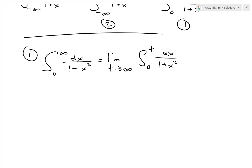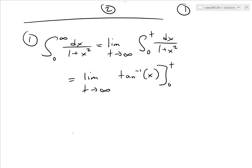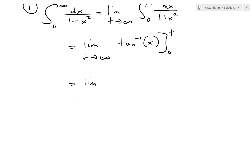The antiderivative of 1 over 1 plus x squared is inverse tan of x. So this equals the limit as t approaches infinity of inverse tan of x evaluated from 0 to t, which gives us the limit as t approaches infinity of inverse tan of t minus inverse tan of 0.